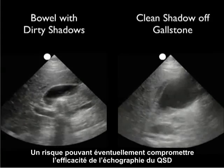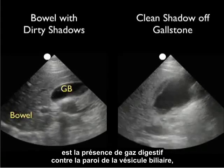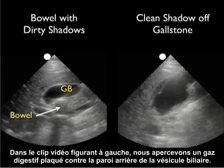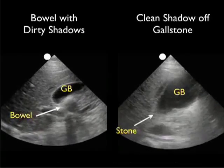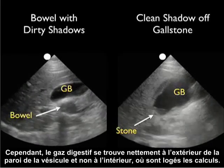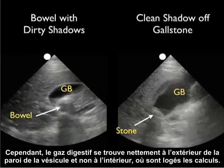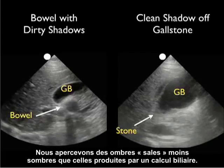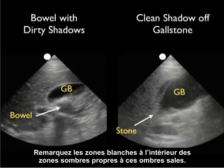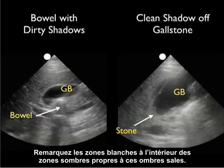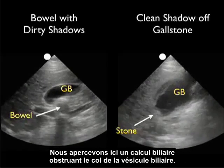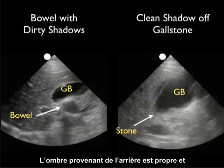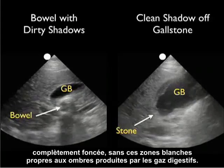One potential pitfall in right upper quadrant sonography is that a loop of bowel may come right up against the wall of the gallbladder and be mistaken for a gallstone. In the video clip to the left we see a loop of bowel against the posterior wall of the gallbladder with a bright hyperechoic appearance that could be mistaken for a gallstone. However, the loop of bowel is clearly outside the gallbladder wall. Also notice the dirty shadows coming off the air-filled bowel — not completely dark, with areas of white within the dark — characterizing a dirty shadow. In the clip to the right, an impacted gallstone at the neck has a hyperechoic appearance clearly within the lumen of the gallbladder, and the shadow off the back is a clean shadow, completely dark without the light areas that characterize air shadows.